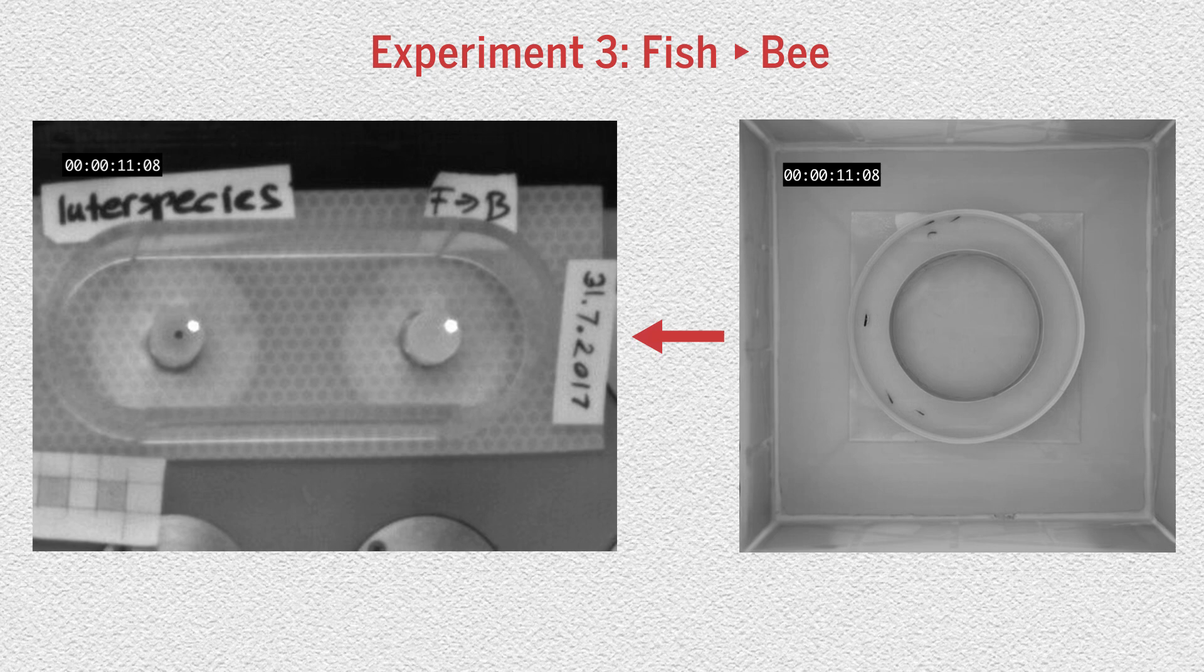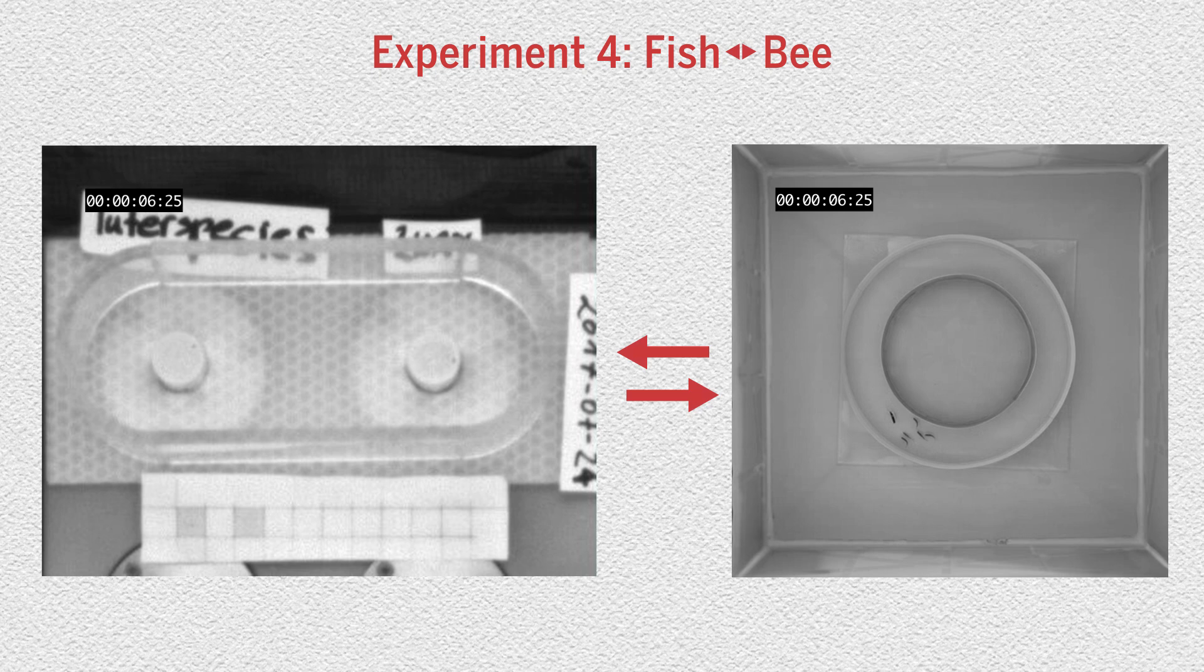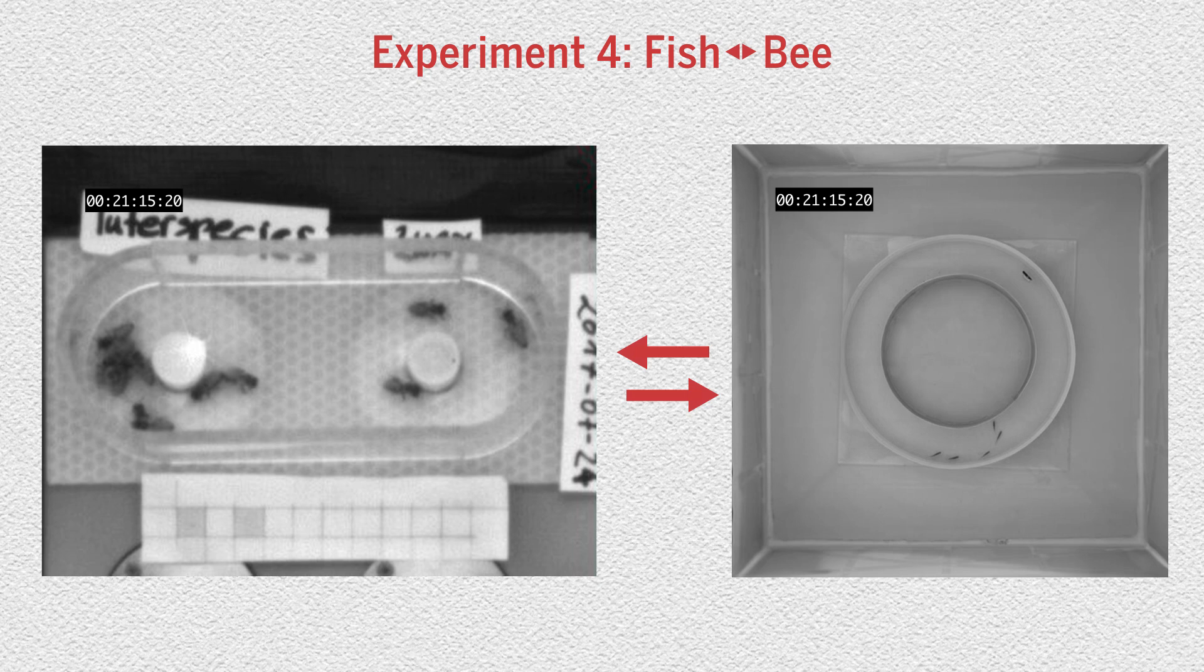In the final experiment, the behavior of both the bees and the fish was observed and transmitted both ways. At first, the fish and bees couldn't come to a decision. One side did one thing, the other another, with lots of switching back and forth. But, after about 20 minutes, they reached a consensus, with the fish swimming counterclockwise and the bees congregating around the left bee robot.